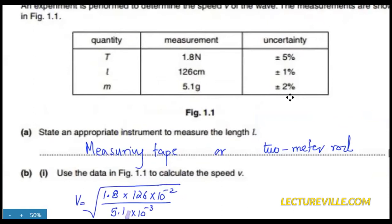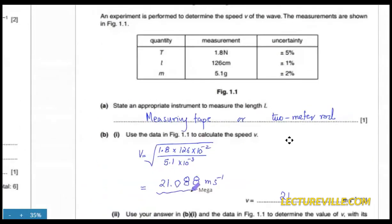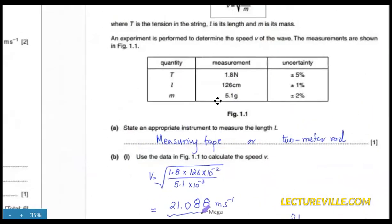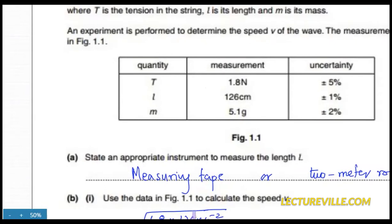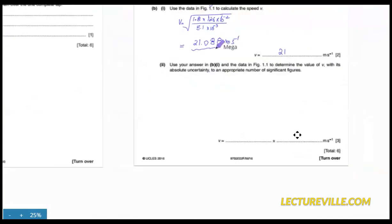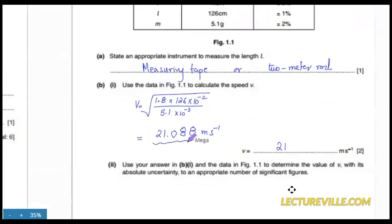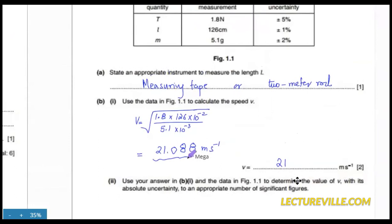A student asks whether the answer should be one significant figure since that's the least in the question. The answer is no — look at the quantities themselves, not their errors. Quantities are given in two significant figures, so the answer should be two or more. The examiner is lenient about extra figures, but writing just '20' (one significant figure) would lose a mark.